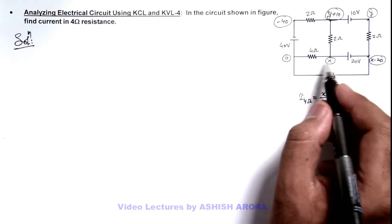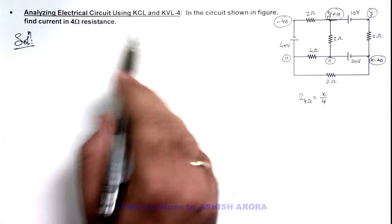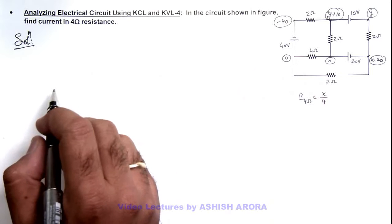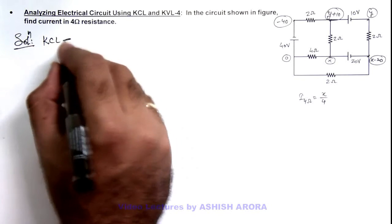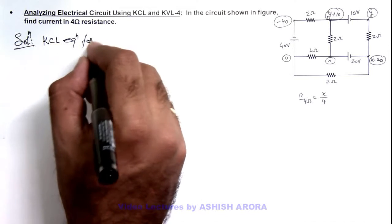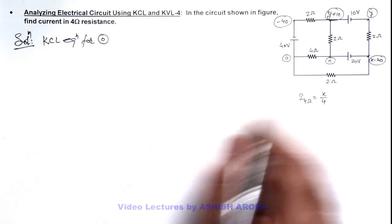Now to get the value of x, we take KCL equations for different parts of the circuit to calculate the value of x. So here, if we write KCL equation for the junction where potential is zero.